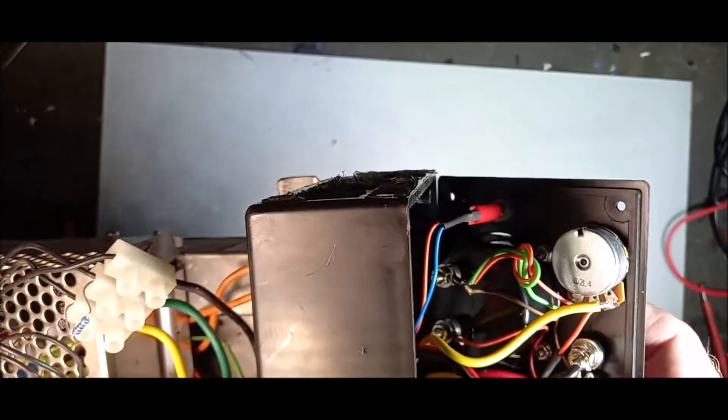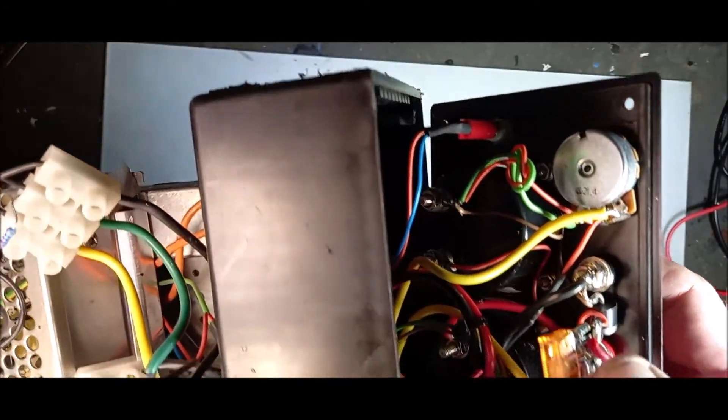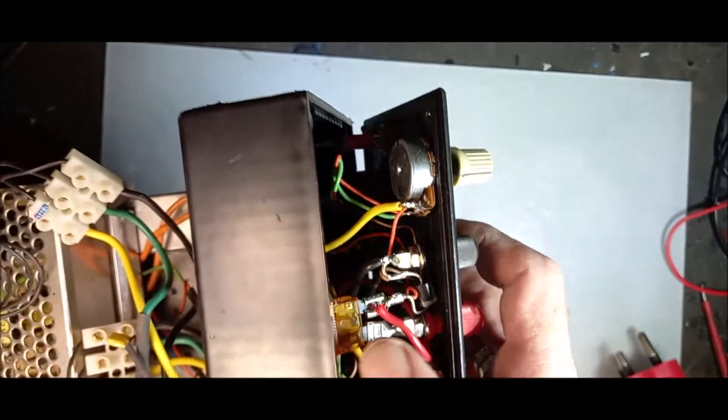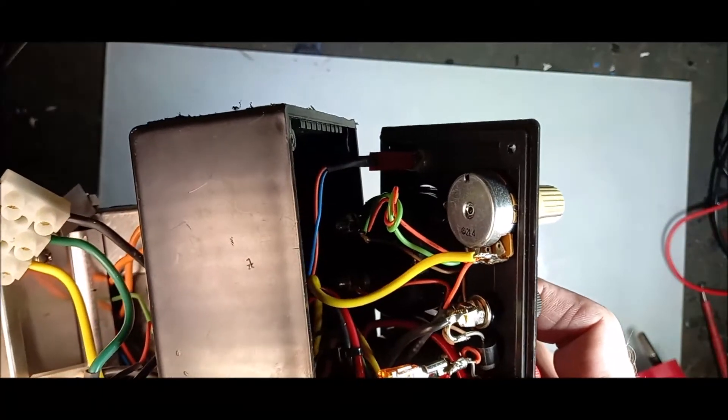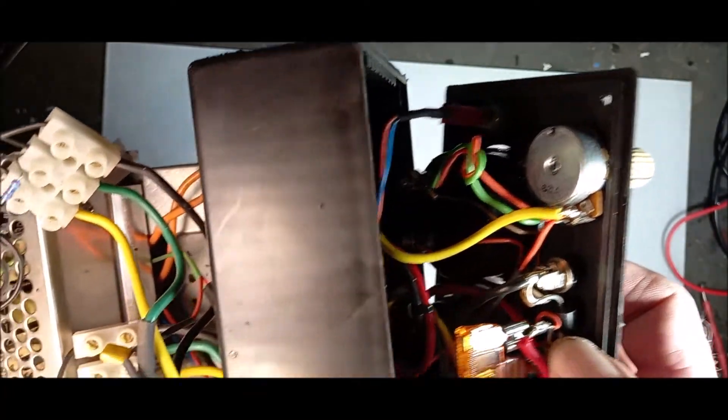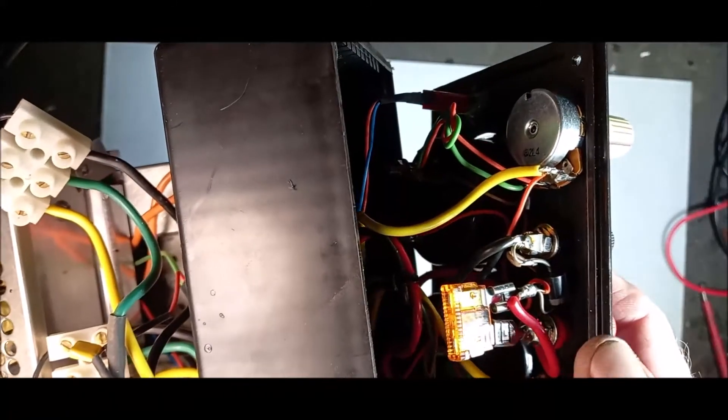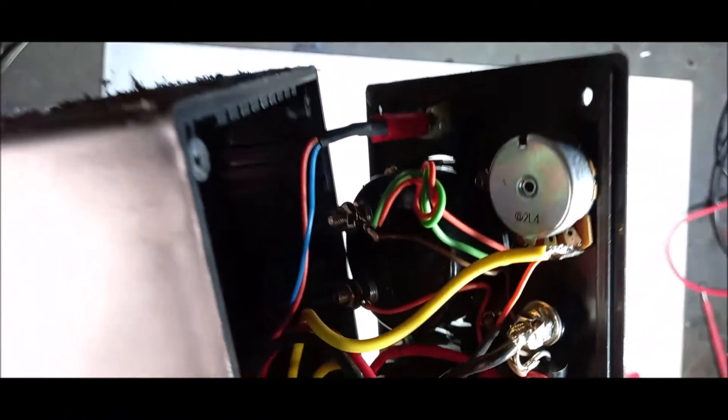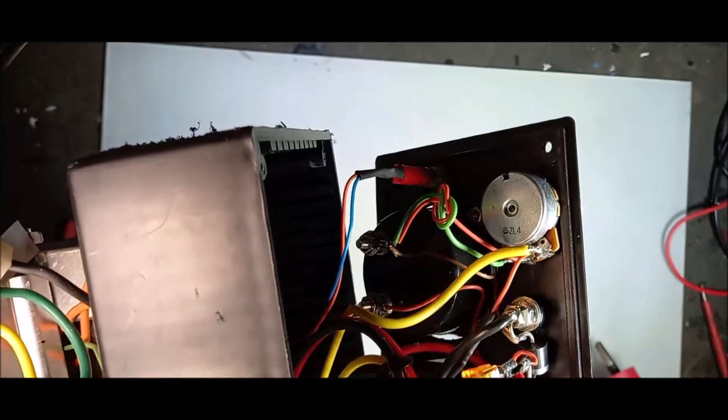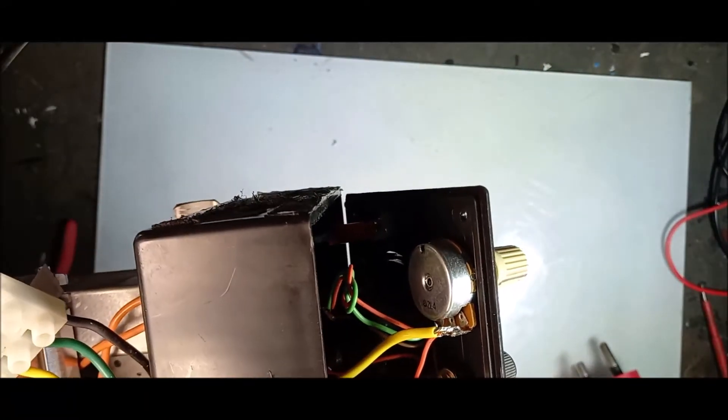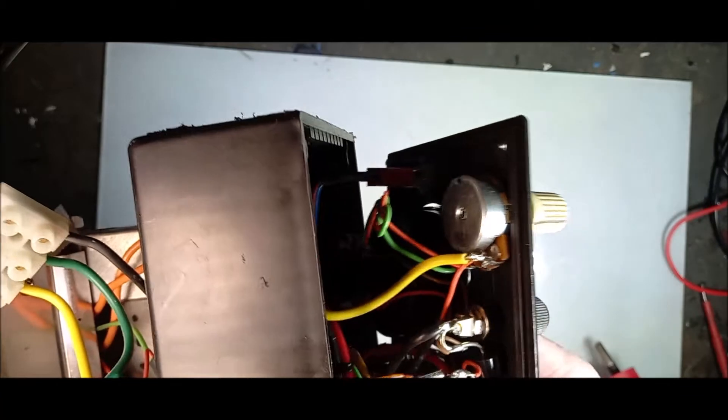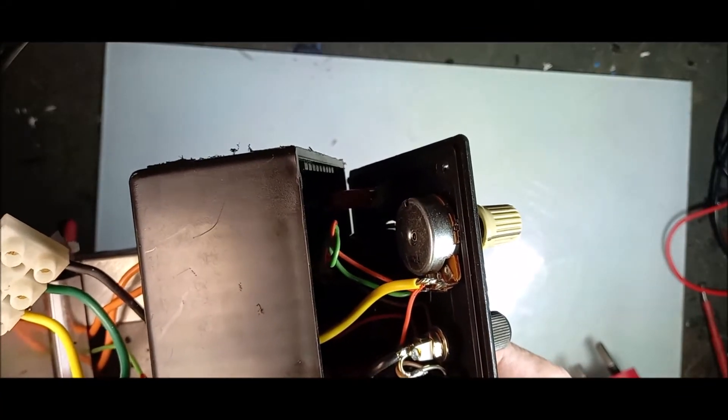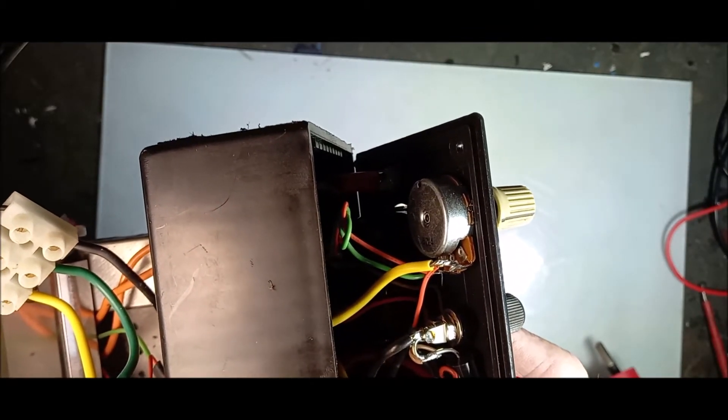Just want to show you for interest, in the back here you'll see I have a fuse from the output, a car fuse. And see that diode there, I put a 6 amp diode parallel onto the output. There's a good reason for it.